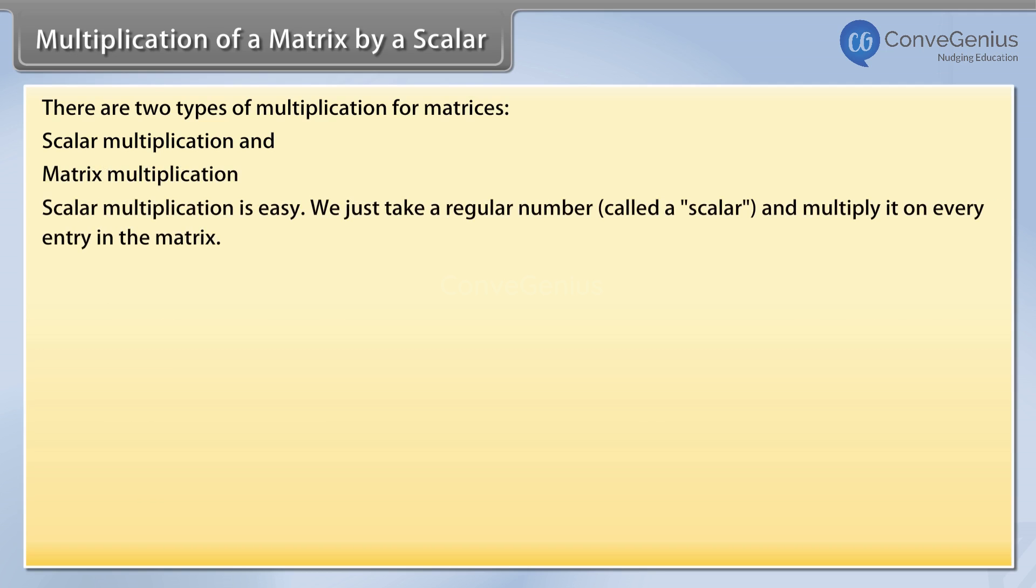Scalar multiplication is easy. We just take a regular number called a scalar and multiply it on every entry in the matrix.